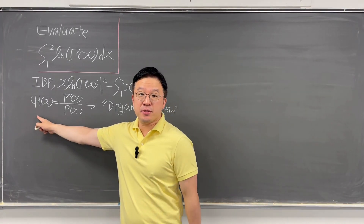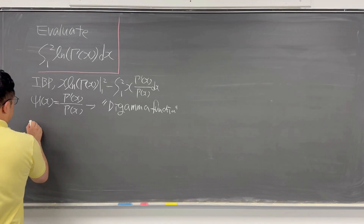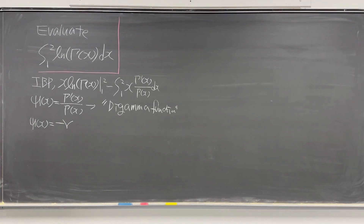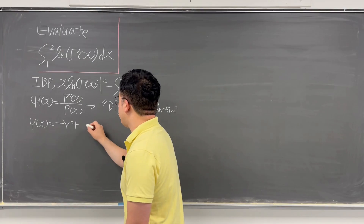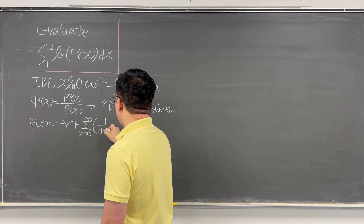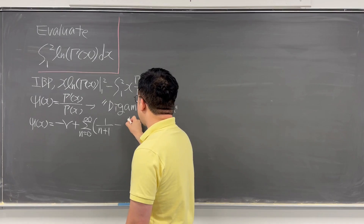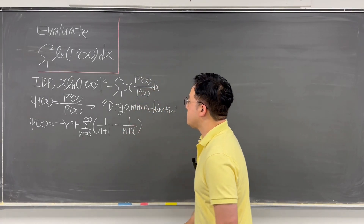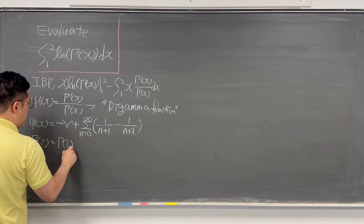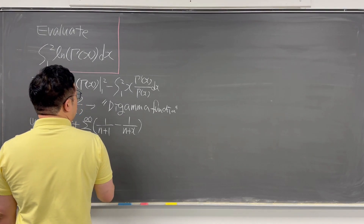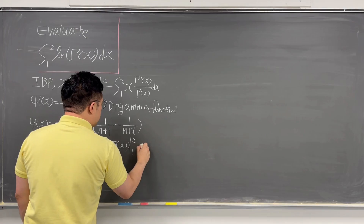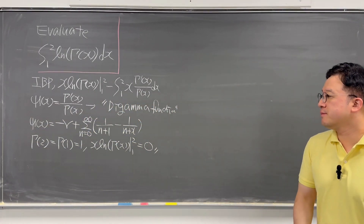The digamma function ψ(x) has the series representation: ψ(x) equals negative Euler–Mascheroni constant γ plus the summation from n=0 to infinity of (1/(n+1) − 1/(n+x)). Also, Γ(2) = Γ(1) = 1, so the boundary term x·ln(Γ(x)) from 1 to 2 equals 0.